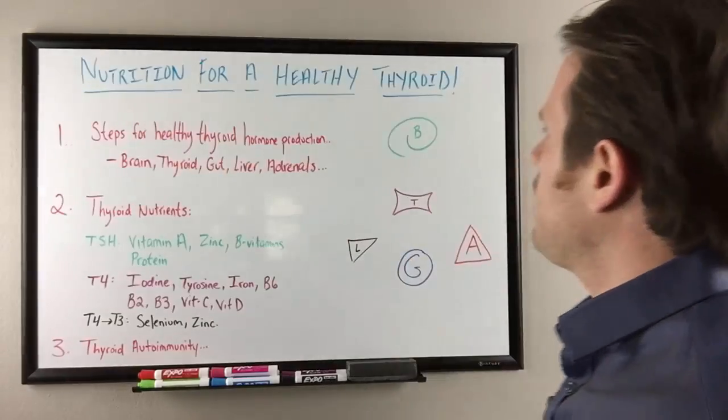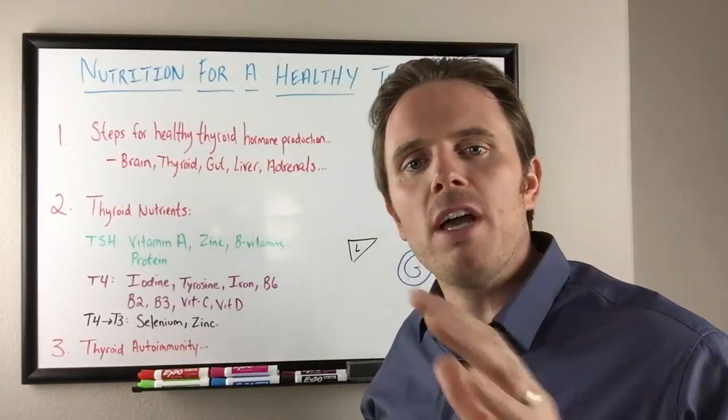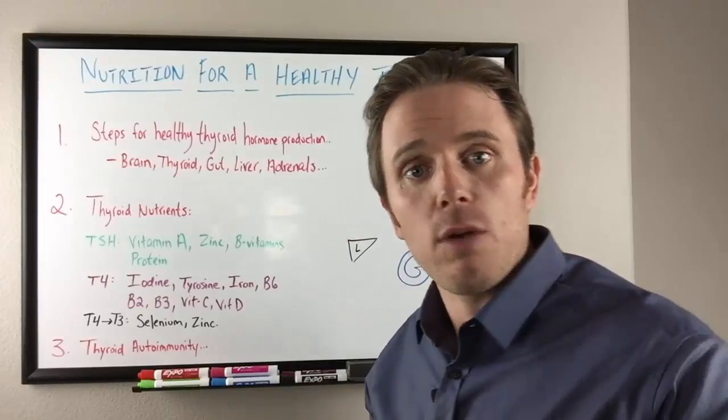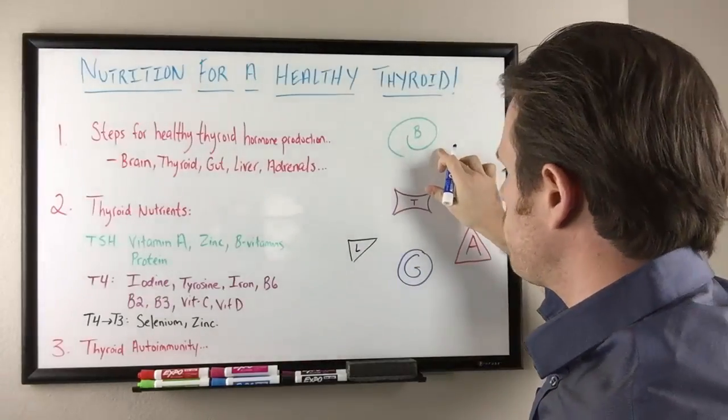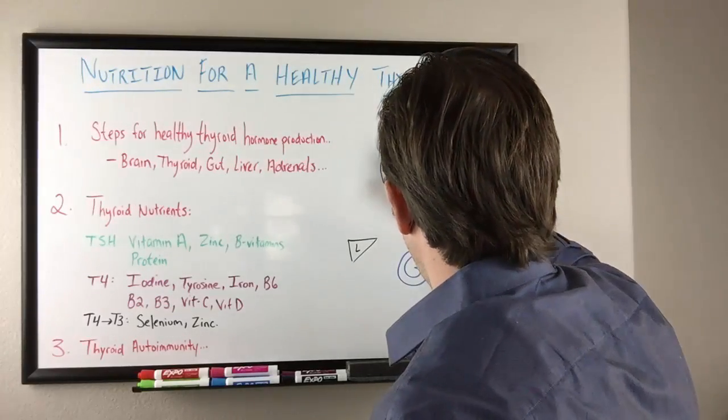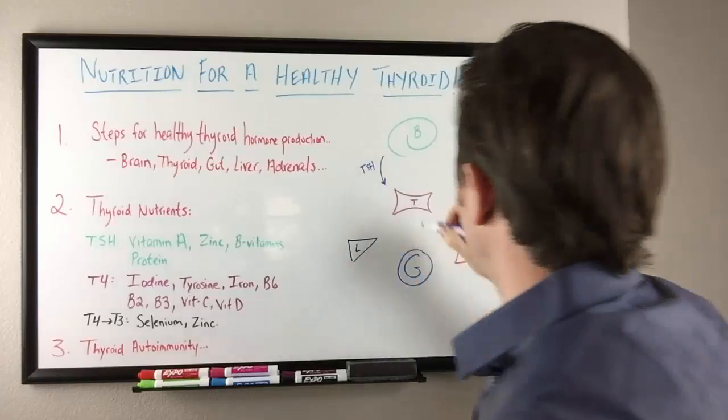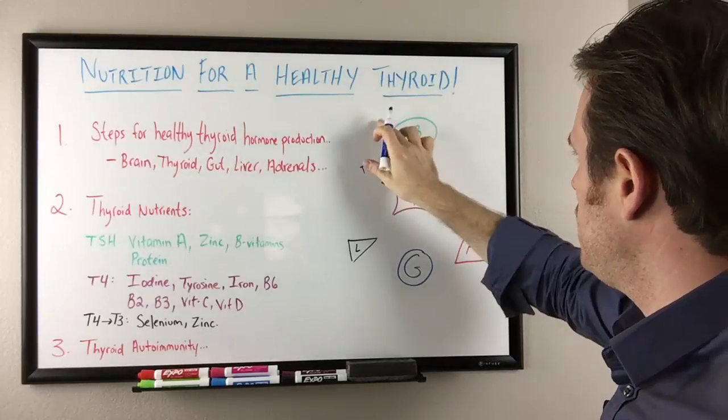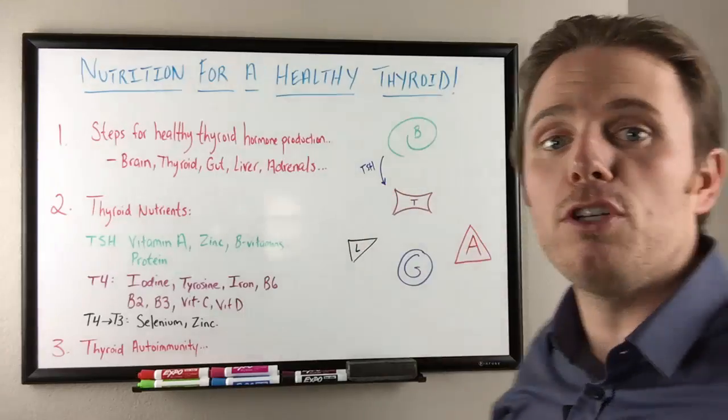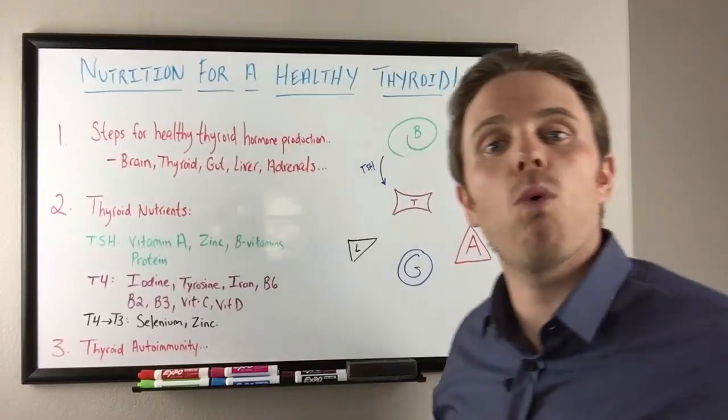Steps for healthy thyroid hormone production. Let's outline how the thyroid hormonal cascade or domino rally works. The first step is the brain signaling down to the thyroid. This pathway is known as TSH or thyroid stimulating hormone where TSH is coming from the brain, particularly the pituitary, and it's telling the thyroid to make thyroid hormone.